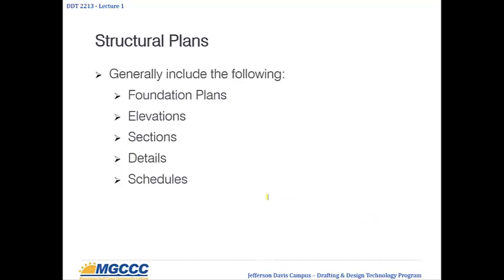Generally included in structural plans: a foundation plan would be first — the concrete, pilings, whatever is in the ground supporting the building. We have elevations in structural plans, which show the structure from a front view, side view — just how the pieces go together. Then we have sections and details, which zoom in on a particular wall, intersection, or similar element to show specifically how things go together. And then schedules — you take a number from a beam, look at the schedule, find that number, and it will tell you the size, shape, length, and all those sorts of things. We're going to get into all of these in great detail during the semester. I just wanted to use this as an overview of structural drafting, what to expect, and what can be expected of you.